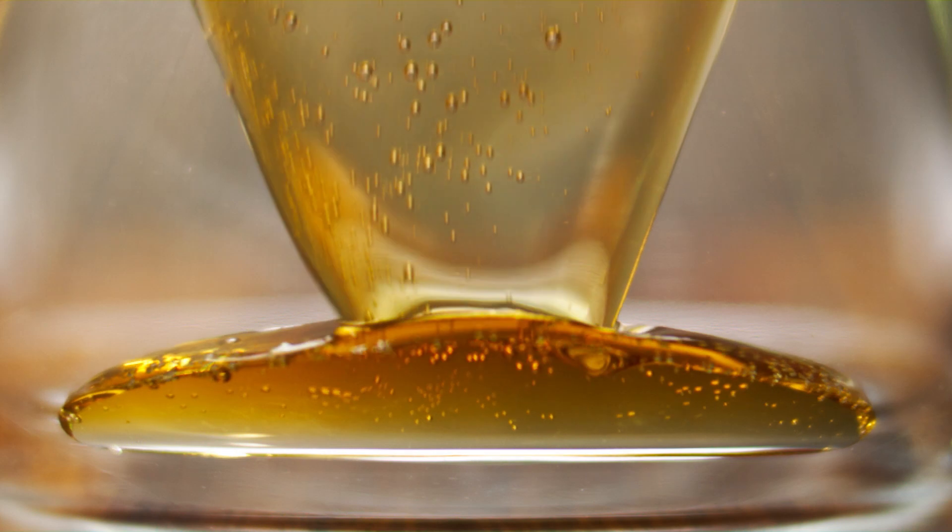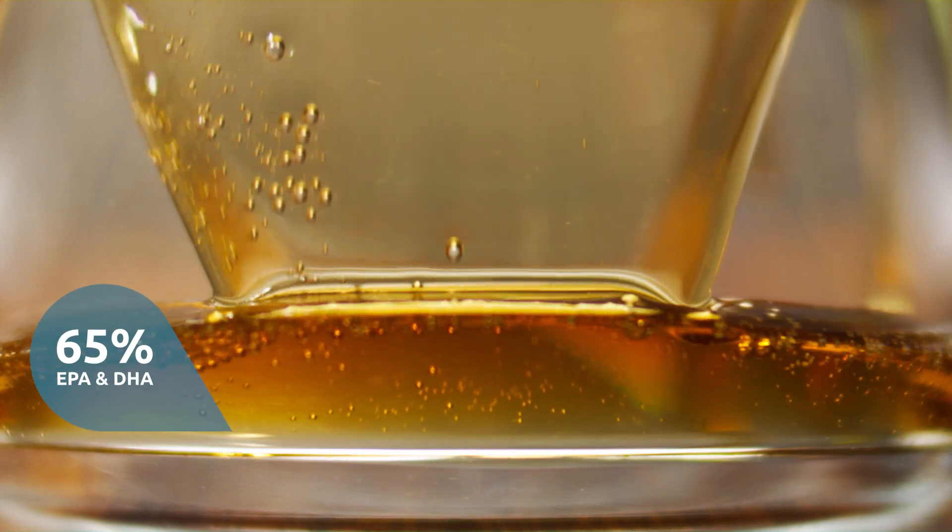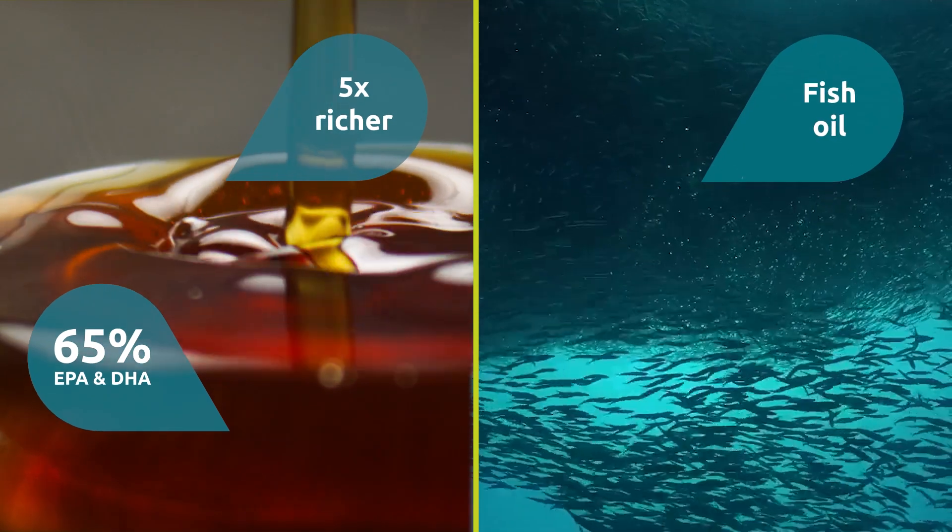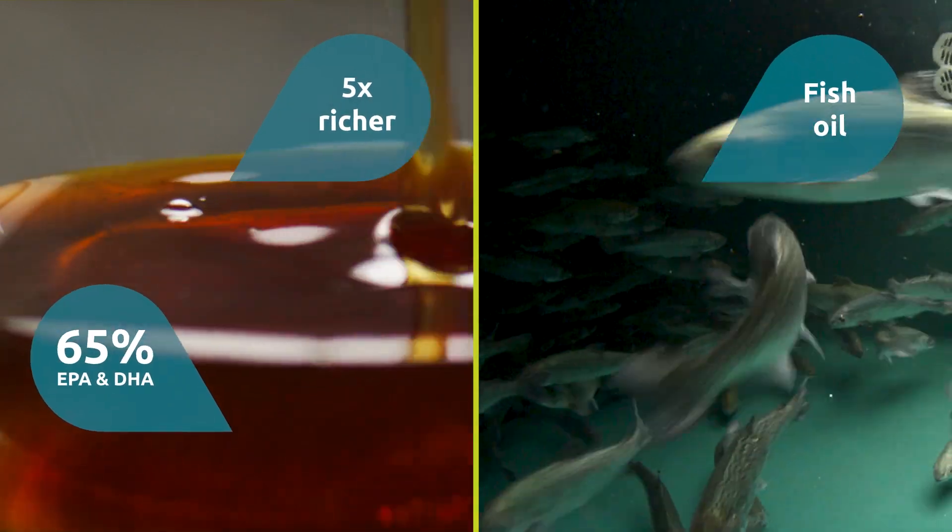Ferro Maris algal oil contains 65% EPA and DHA. That's up to five times richer than fish oil, the traditional source of Omega-3 for animal feed.